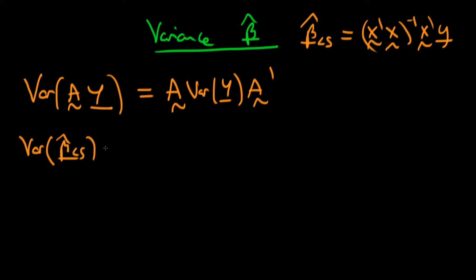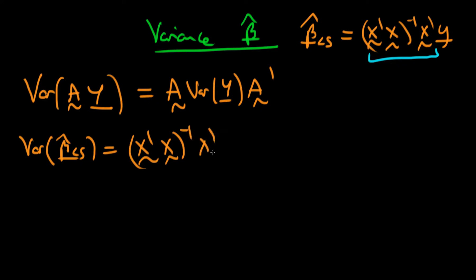We can think of the first term as being matrix A. So the variance of beta hat least squares gives us A, which is X prime X to the power minus one times X prime, multiplied by the variance of Y, and then we need to find A prime, or A transposed.